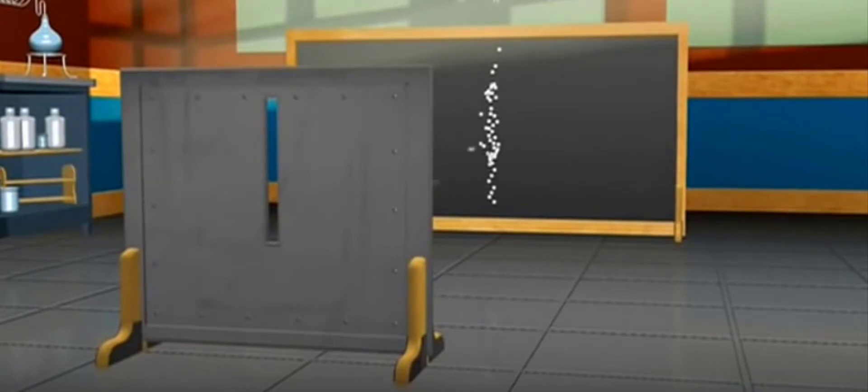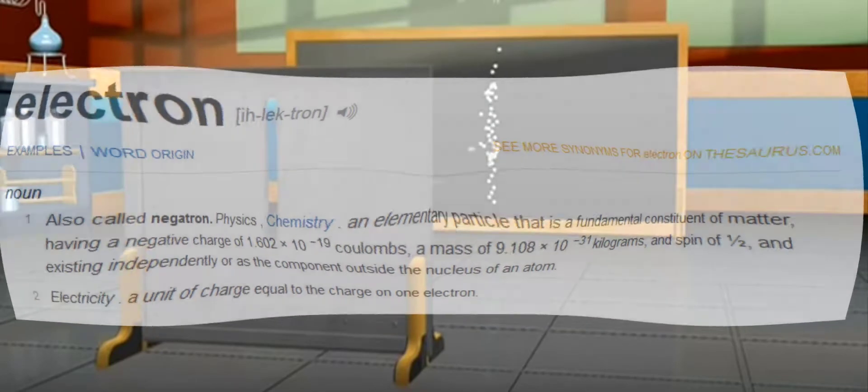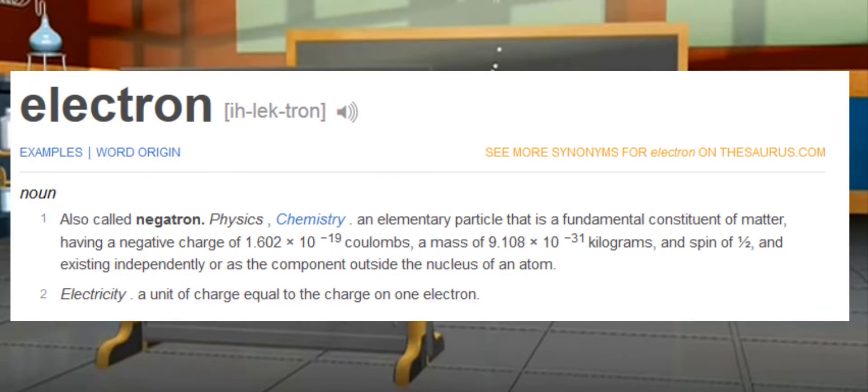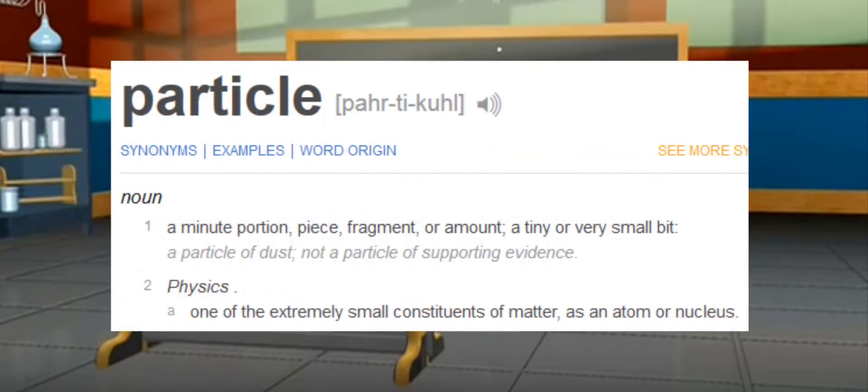The double slit experiment doesn't use marbles simply because marbles are too big. Instead, electrons are fired. Electrons are elementary particles that are a fundamental constituent of matter. So essentially, if you take a marble and break it into a billion pieces, these little electrons or pieces of physical matter are spread all over the place.